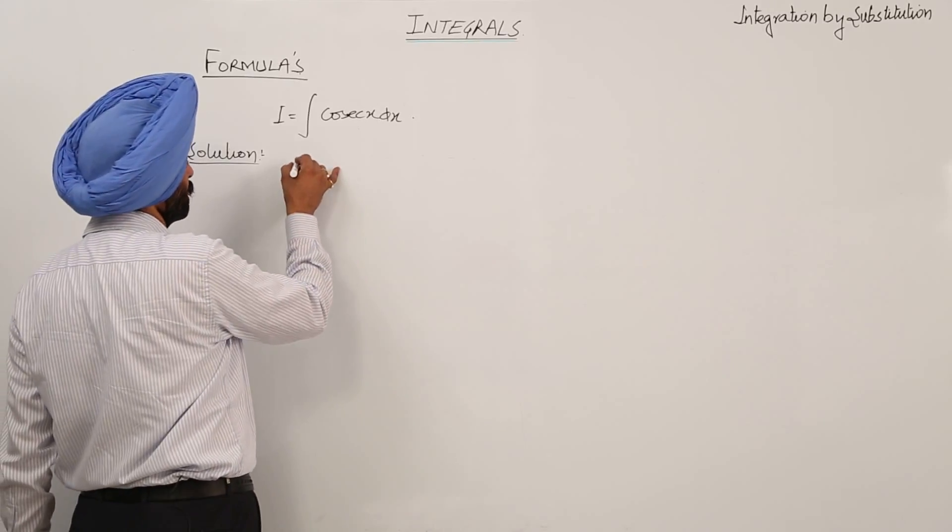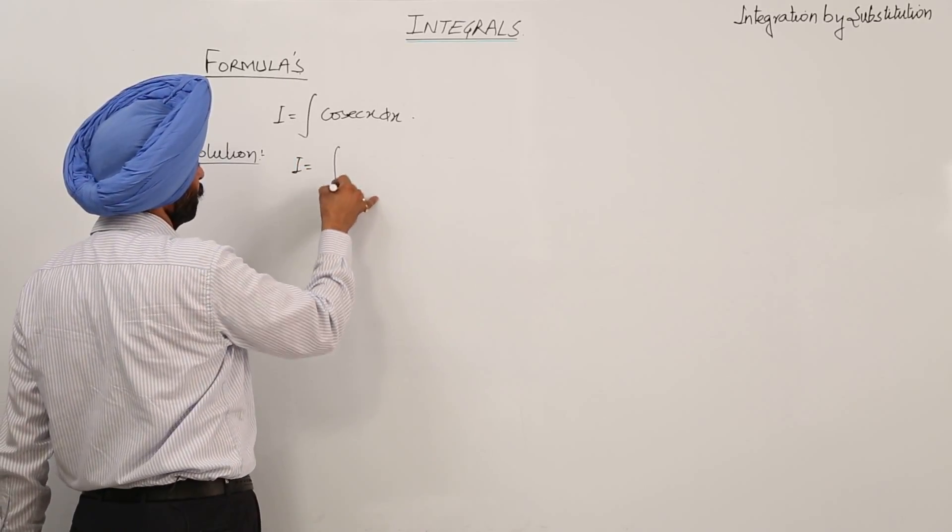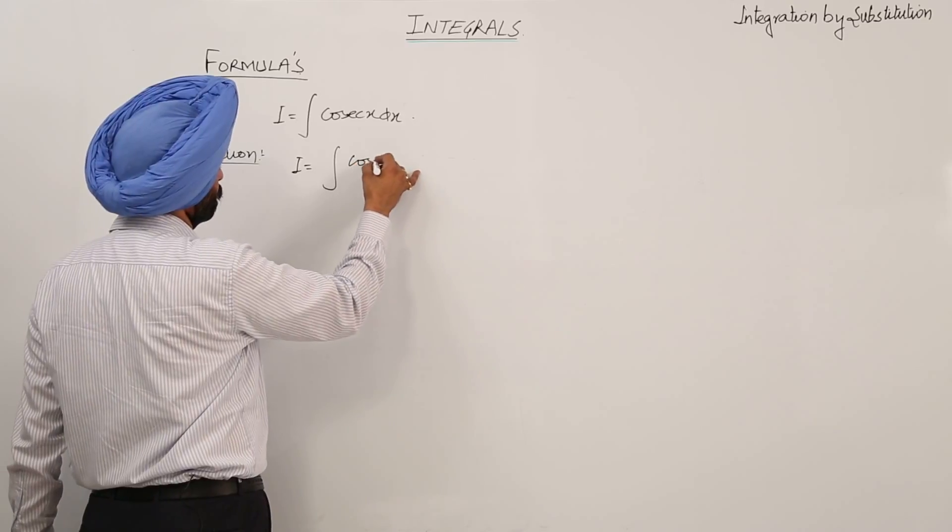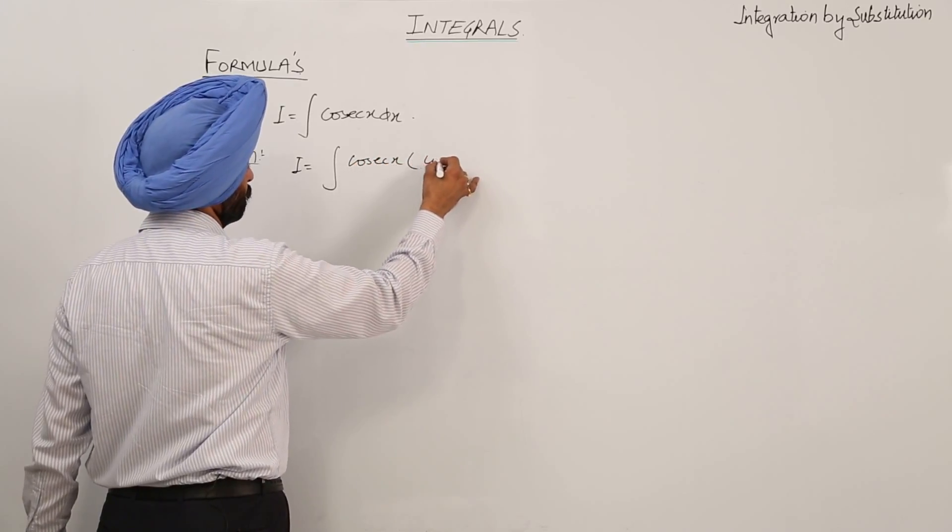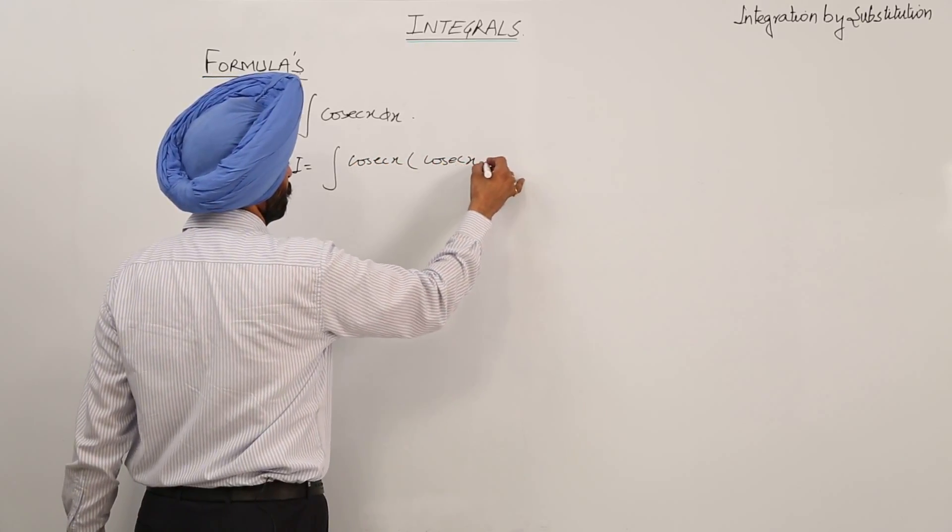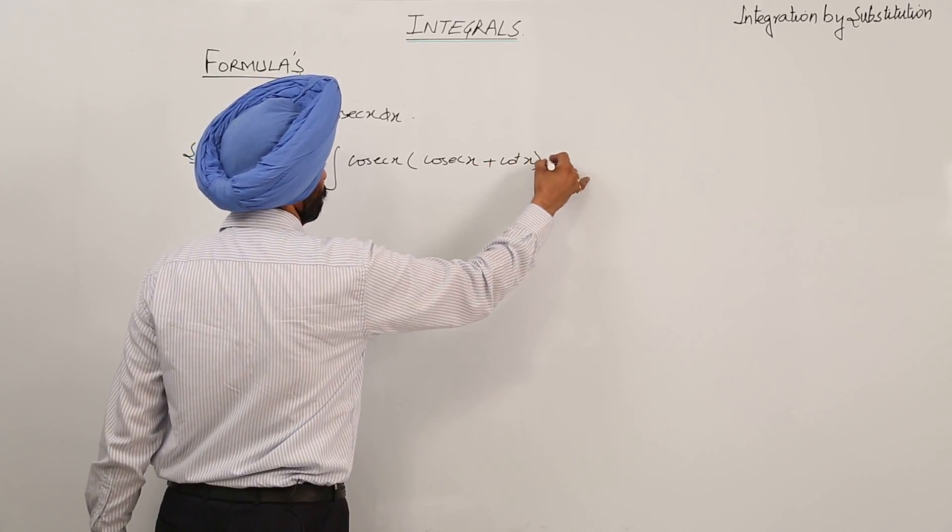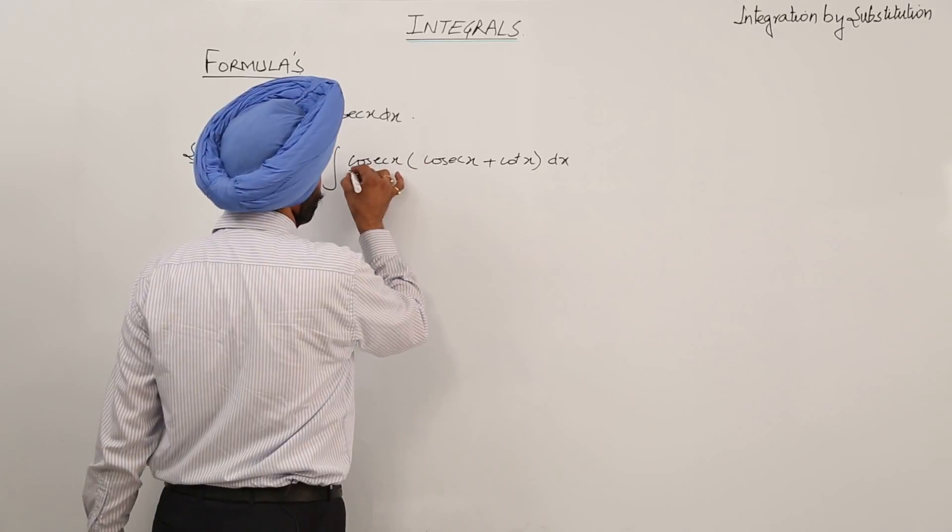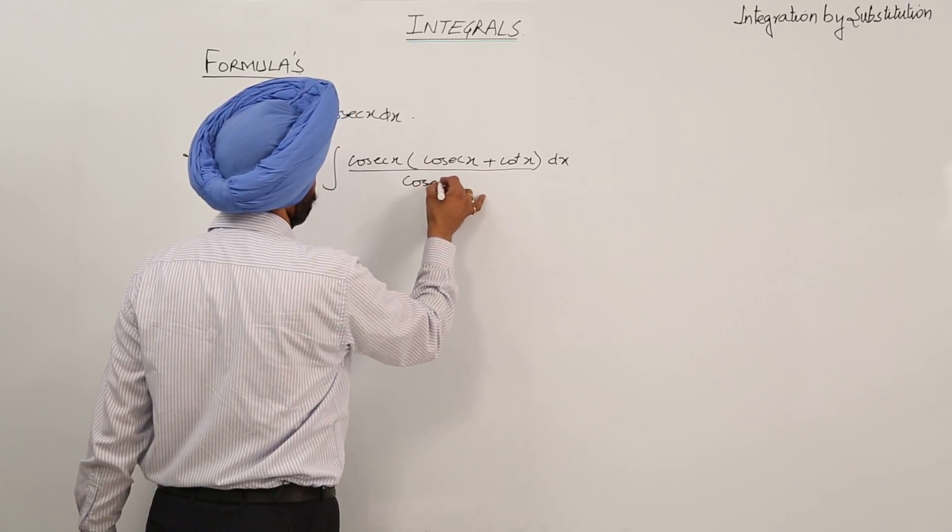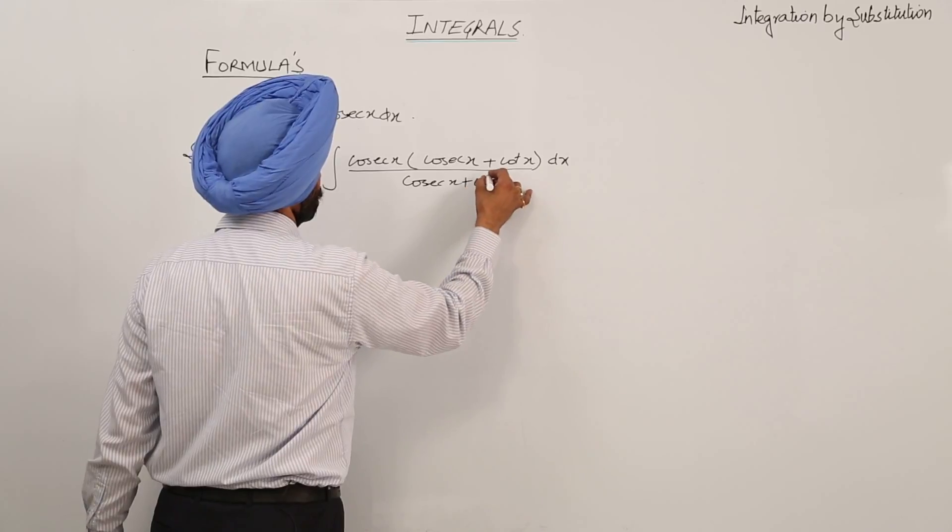This formula will be derived by multiplying cosecant x by cosecant x plus cot x, dx, divided by cosecant x plus cot x.